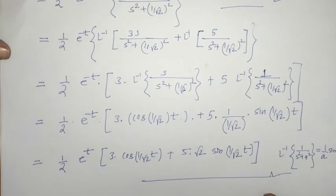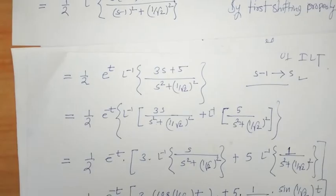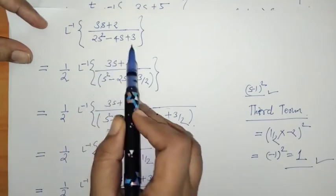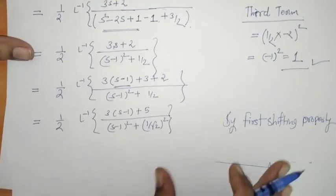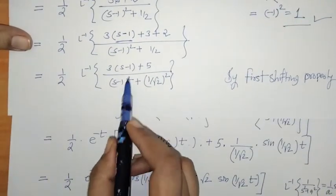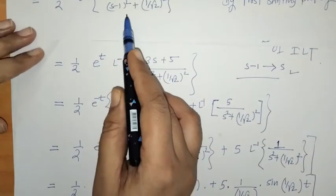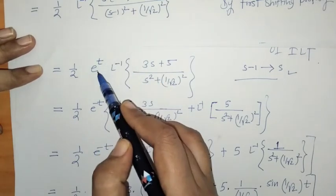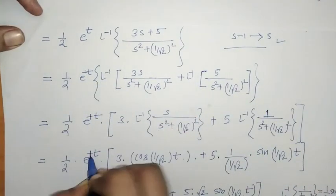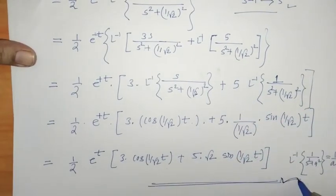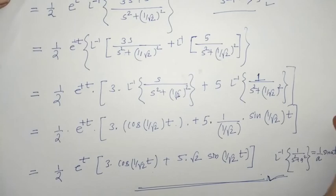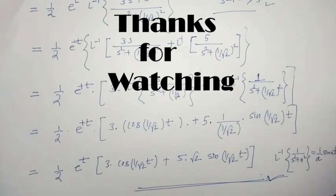To summarize: we found L-inverse of the given function by making the quadratic factor a perfect square, then adjusting the numerator to contain (s − 1), and applying the first shifting property of inverse Laplace transform. That's it for now — see you in the next video, thank you, keep watching.